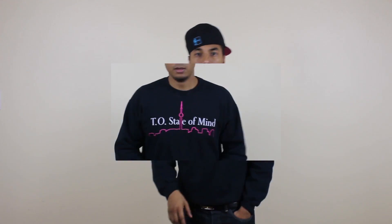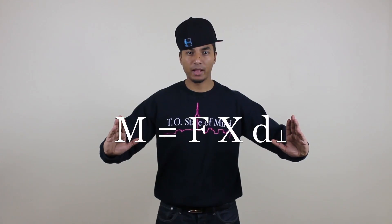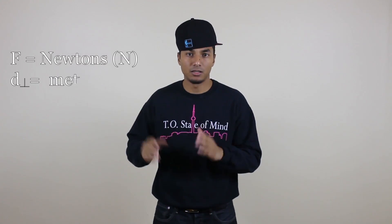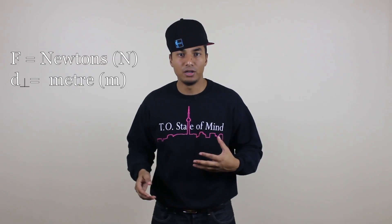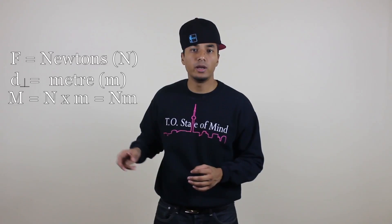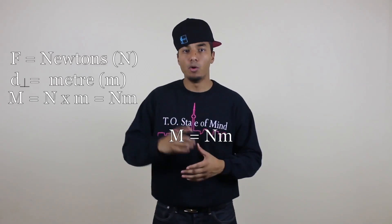Now let's look at the units for a moment. A moment is comprised of two things: a force and a moment arm. The equation is: moment equals force multiplied by moment arm. The units of force are newtons, and the moment arm is a perpendicular distance, so we keep it in meters. Newtons multiplied by meters produces the unit newton-meter — that is the unit of a moment.